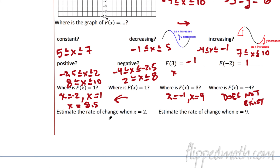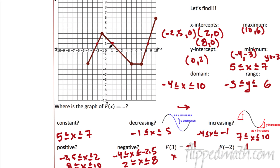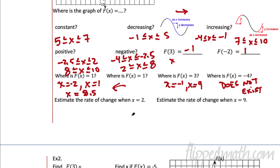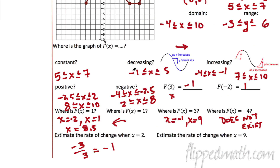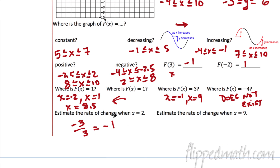The rate of change — we're going to estimate the rate of change when x is 2. Here's x equals 2; the rate of change means the slope. So we're going down 1, 2, 3 over 1, 2, 3 — it's down 1 over 1. So the slope is about negative 1. That's the rate of change — remember, that equals the slope.